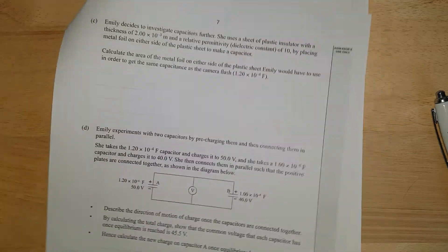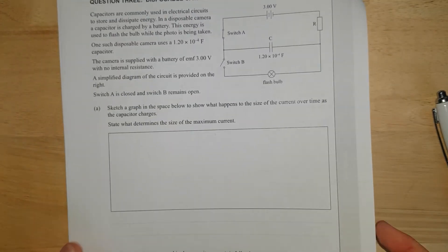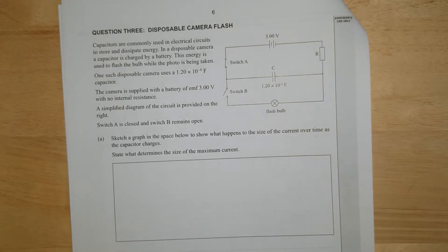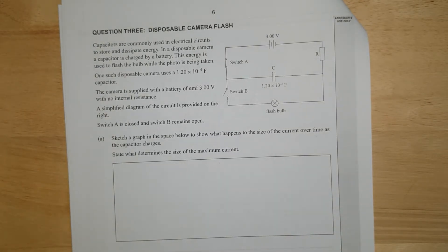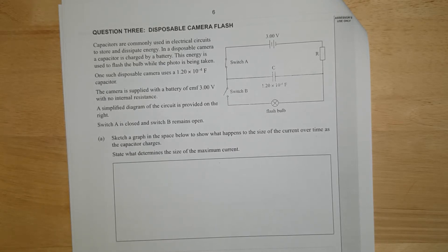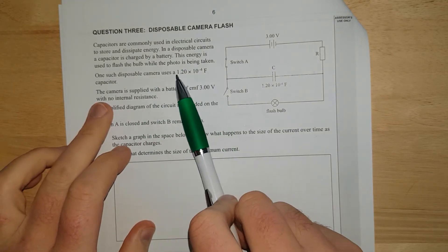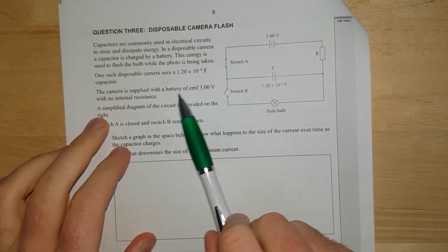This is question 3 of the 2020 electricity exam, level 3. Capacitors are commonly used in electrical circuits. They store and dissipate energy. In a disposable camera, capacitors charge by a battery. The energy is used to flash the bulb while the photo has been taken. It's got a capacitor of 1.2 x 10^-4.